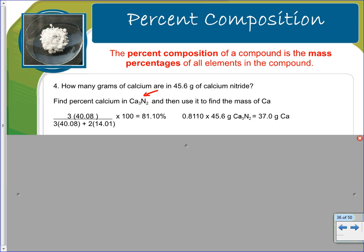So I set it up where I did part out of the whole. This is the part that is calcium. There's three calcium times 40.08. You get that from the periodic table. Over the whole amount is the molar mass of the whole thing. I find that it's 81.10 percent is calcium. So we take that percentage, pull it out of its percentage format, and multiply it against the amount in the problem, and we find it's 37.0 grams calcium.